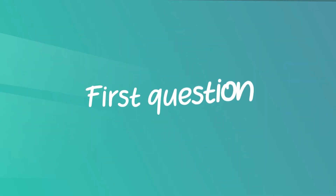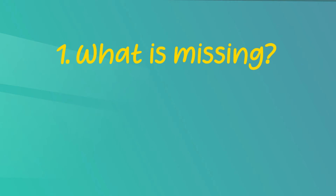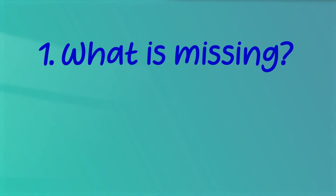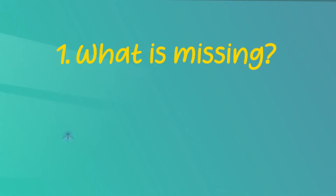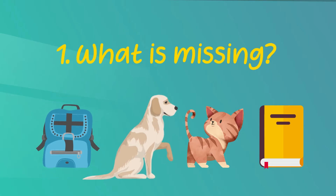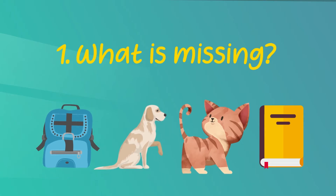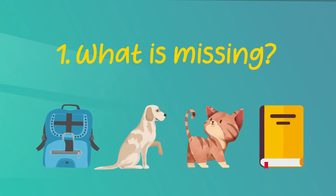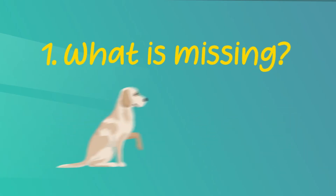Here is your first question. The question says: what is missing? So you have to read the notice and find what is missing. You have four options: a school bag, a dog, a cat and a book. According to the notice, what is missing? You are correct — a dog.